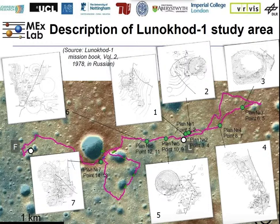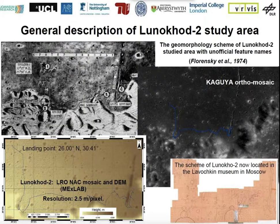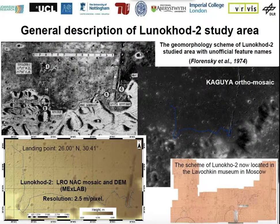It was very difficult to find the point of shooting for this project. We used LRO images — here you can see a digital elevation model — and using this information we found the points of shooting. You can also see old maps produced during the Luna 17 mission, a description of the Lunokhod 2 study area, an old geology map produced during the mission, and a schema of the rover road produced during the missions.